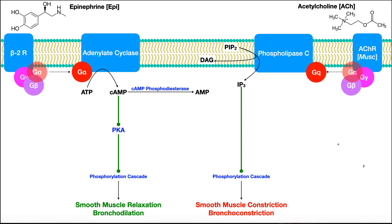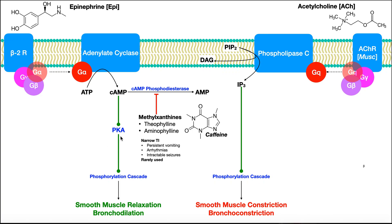Now that we understand the basic biosignaling, let's take a look at some of the specific types of drugs that are going to be able to affect different parts of these pathways. The first class we're going to look at are what are called the methylxanthines. The most common methylxanthine that you've probably heard of is caffeine, contained in things like energy drinks and coffee. Caffeine itself is not used in traditional pharmacological treatment — it's more recreational. But what is important is that these methylxanthines inhibit the enzyme cyclic AMP phosphodiesterase.